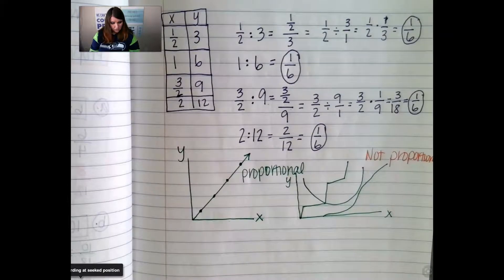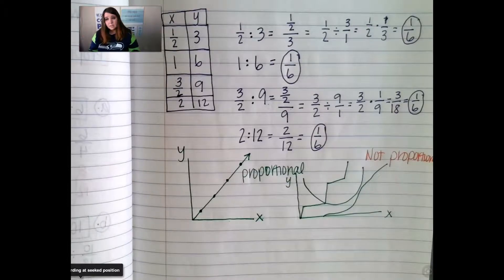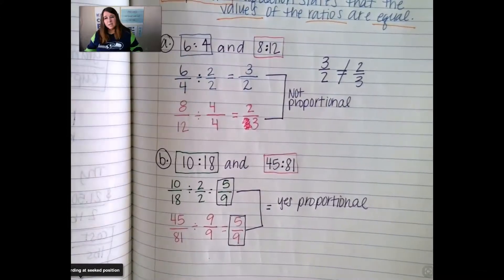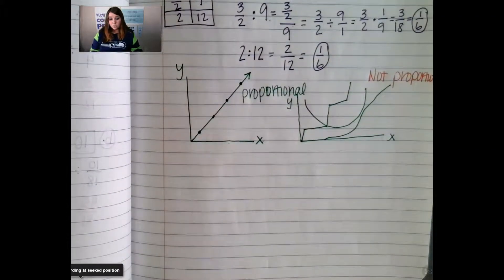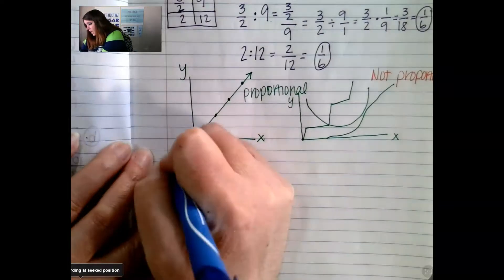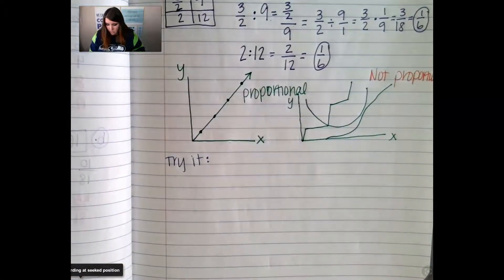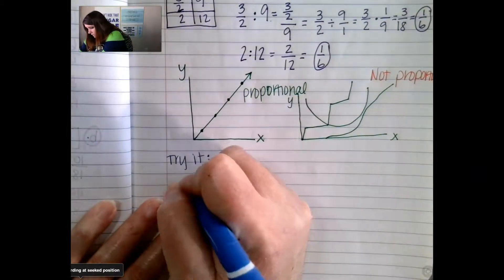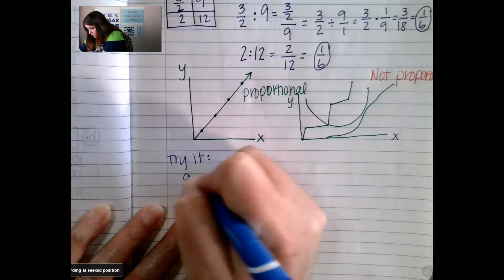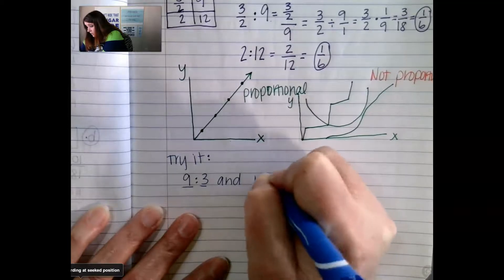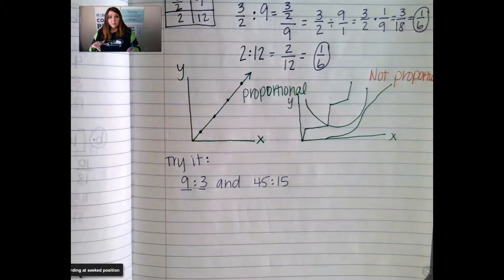All right, let's do a try it. I want you to tell me if the two quantities are proportional. We're going to compare the ratios just like we did before. You can put them in a table if you want, but you don't have to. So here's the try it: are these two ratios proportional? Nine to three, and 45 to 15. Go ahead and hit pause right now so you don't hear me solving, and when you're ready, hit play.